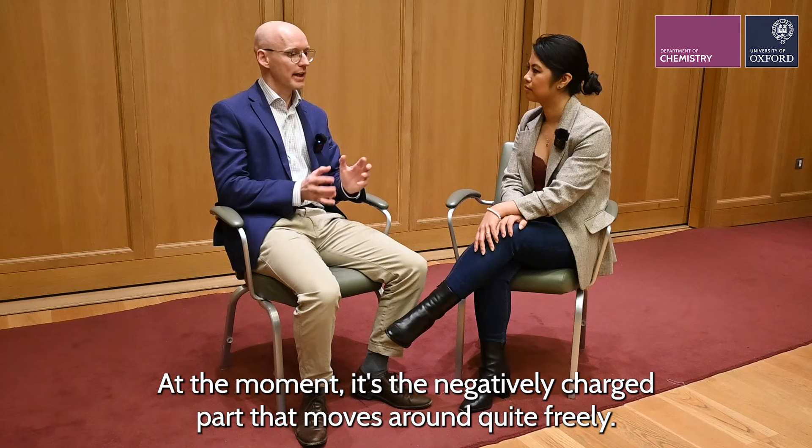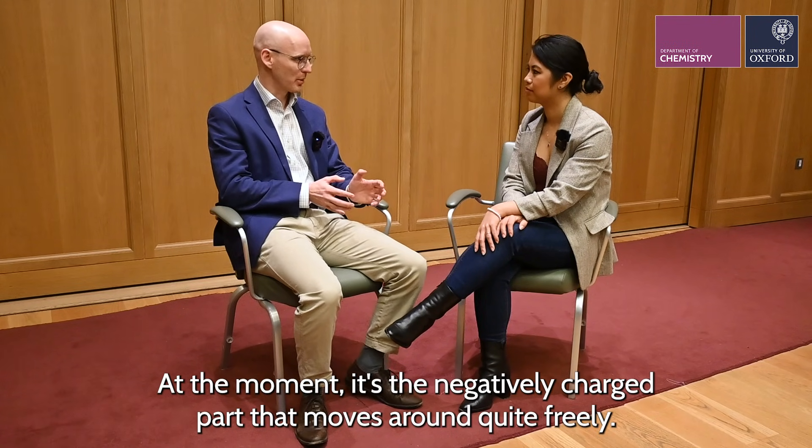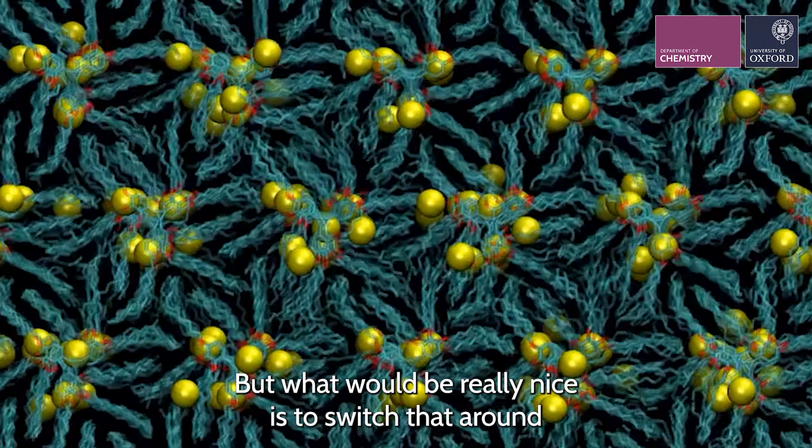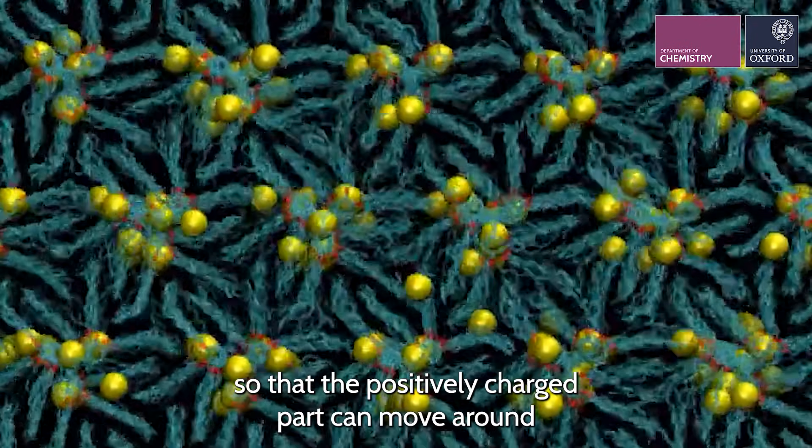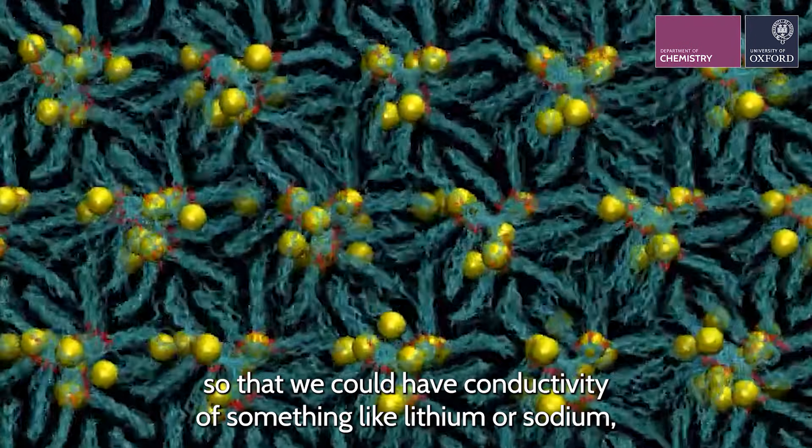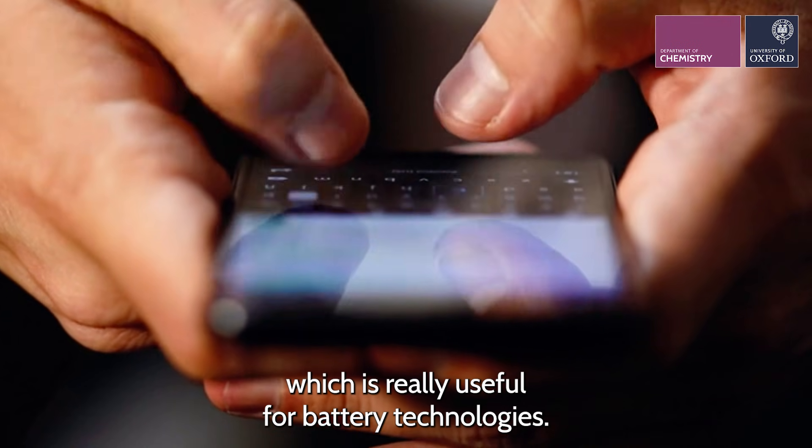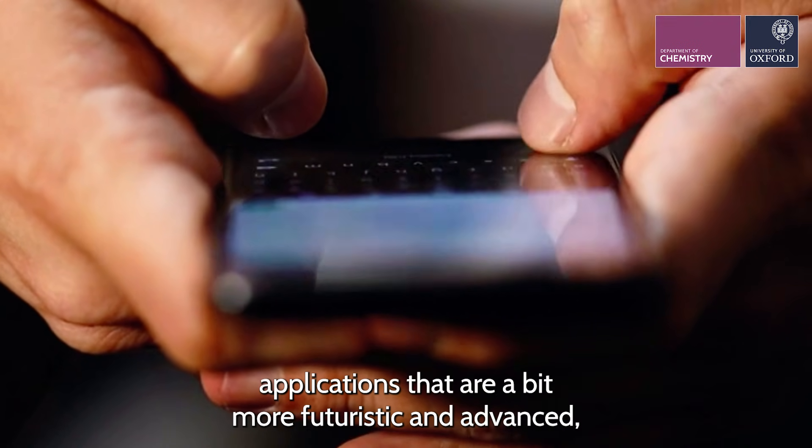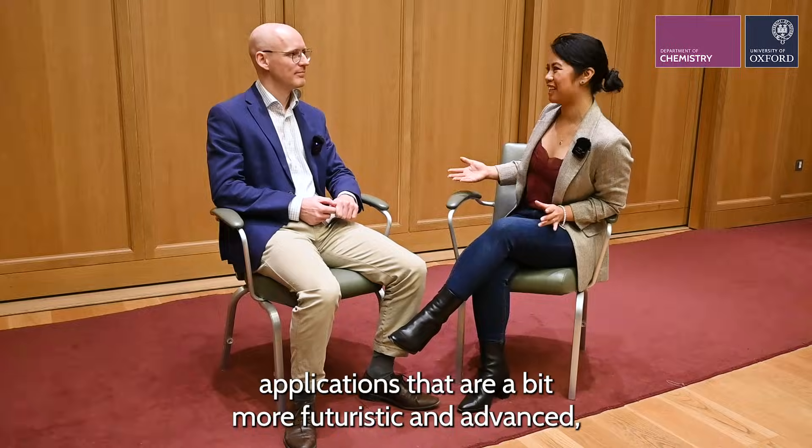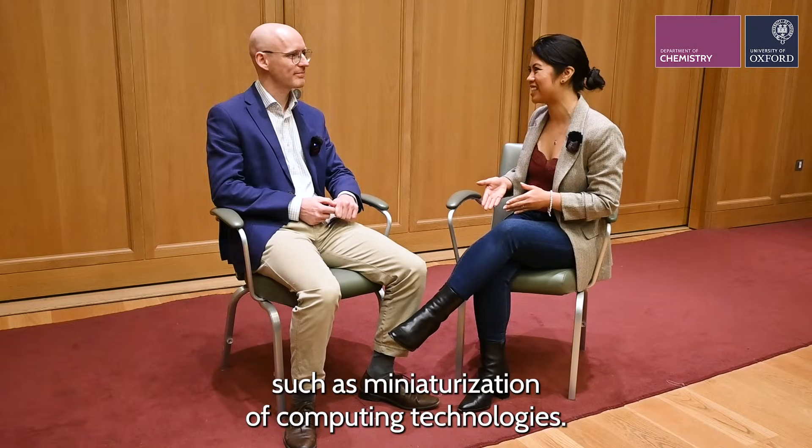At the moment, it's the negatively charged part that moves around quite freely. But what would be really nice is to switch that around so that the positively charged part can move around so that we could have conductivity of something like lithium or sodium, which is really useful for battery technologies. But we can also start to think of applications that are a bit more futuristic in advance, such as miniaturization of computing technologies.